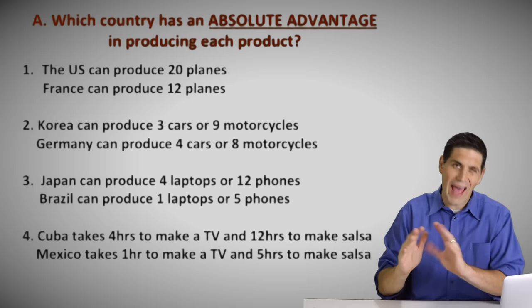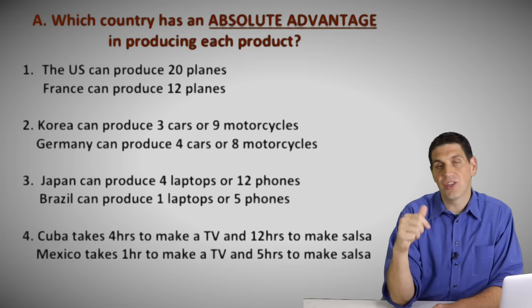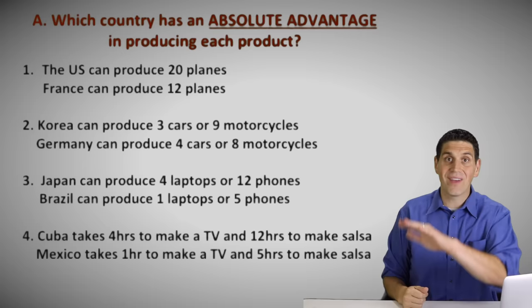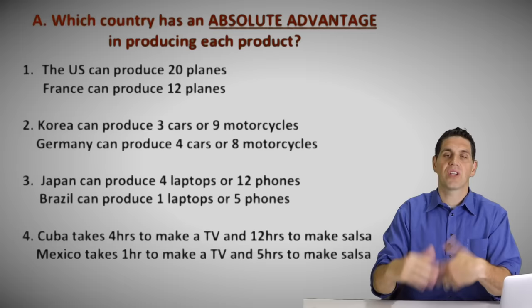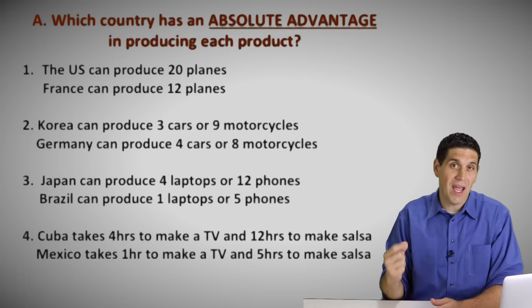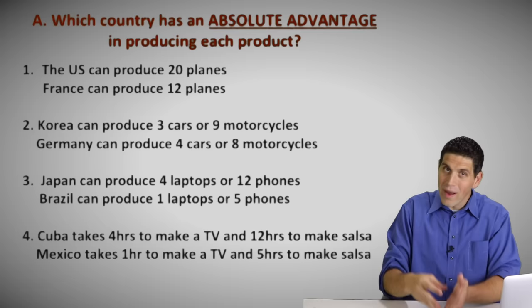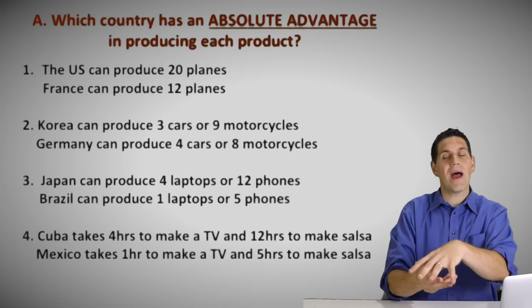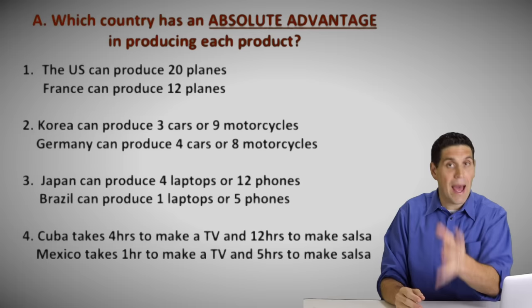In the third one, Japan has the absolute advantage in laptops and an absolute advantage in phones. Then number four — take a look, because this is one of the things that can trip you up. The numbers in scenarios three and four are exactly the same, except scenario four is an input question. Scenarios one, two, and three were output questions because they're producing stuff. In scenario four, they're asking about hours. Cuba takes four hours to produce a TV and Mexico takes one hour. One hour is better because they require less resources to produce the same thing. So Mexico has the absolute advantage. For input questions, things are kind of reversed because we're looking at hours. Mexico also has an absolute advantage in salsa because they take fewer hours than Cuba.